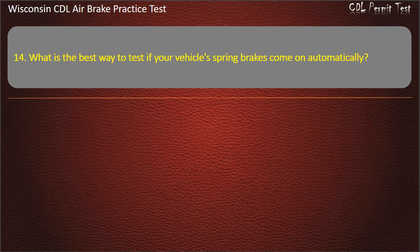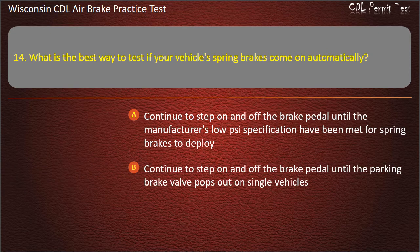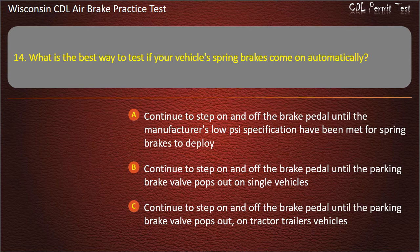Question 14. What is the best way to test if your vehicle's spring brakes come on automatically? Continue to step on and off the brake pedal until the manufacturer's low air pressure specifications have been met for spring brakes to deploy. Continue to step on and off the brake pedal until the parking brake valve pops out on single vehicles. Continue to step on and off the brake pedal until the parking brake valve pops out on tractor-trailer vehicles.